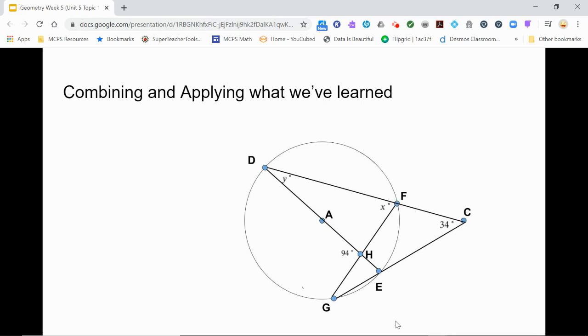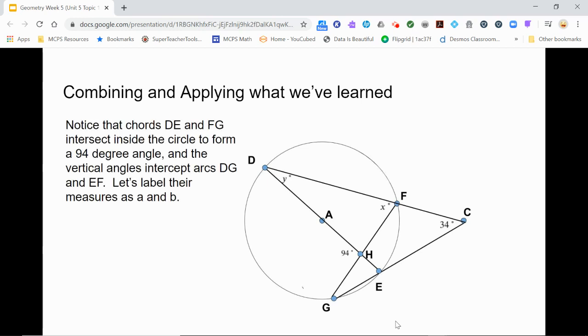For example, if we focus on chords DE and FG, we see that they intersect in a 94 degree angle and that the vertical angles intercept arcs DG and EF. Let's label their arc measures A and B. That means that the sum of A and B equals twice 94 or 188.